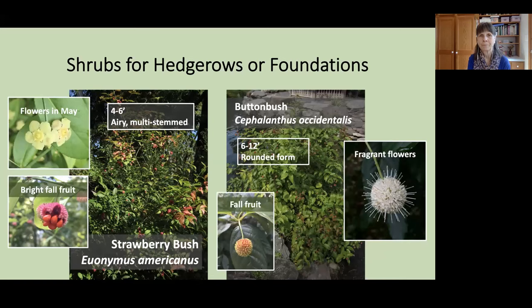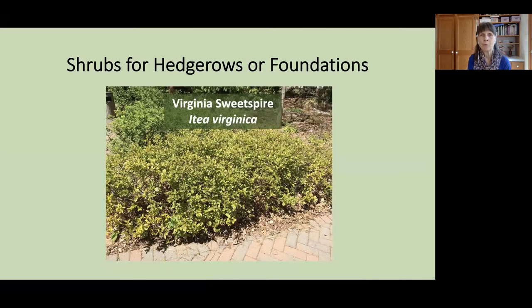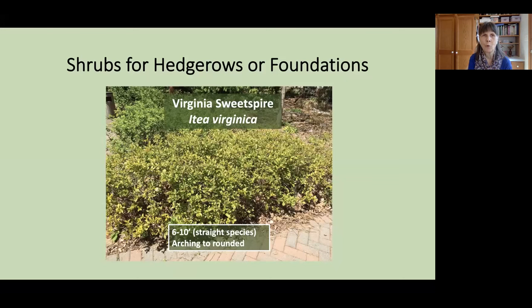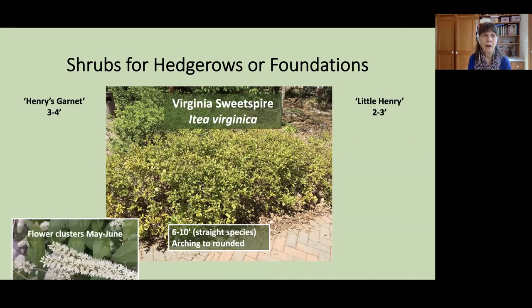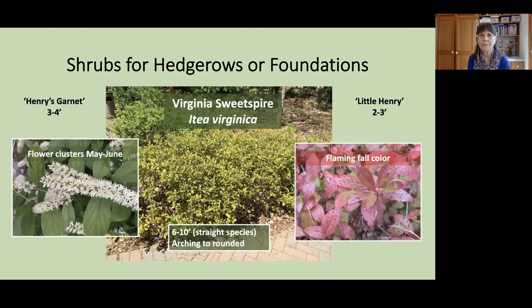Another great example, particularly for hedgerows and foundations, is Virginia Sweet Spire, Itea virginica. The straight species reaches six to ten feet in height and can have either an arching or a rounded form. If you wanted a slightly shorter form, you could go for the Henry's Garnet cultivar at about three to four feet, or even shorter, the Little Henry at two to three feet — the particular form pictured here in the center. You can see how it has sent out suckers and actually formed a nice little hedge. All three sizes of Virginia Sweet Spire will have lovely flower clusters in May and June, and then flaming fall color that will rival burning bush in the fall.